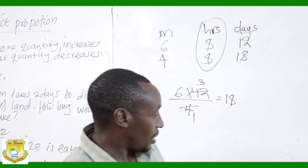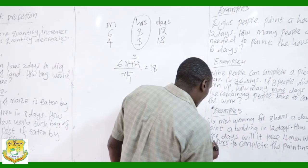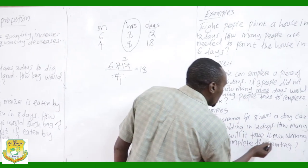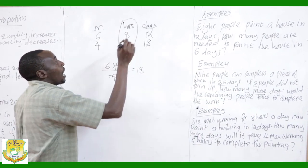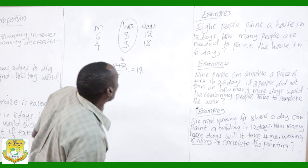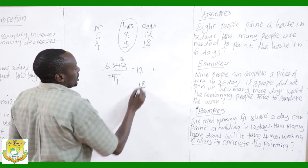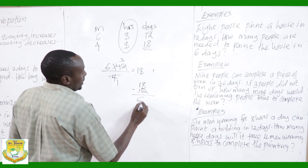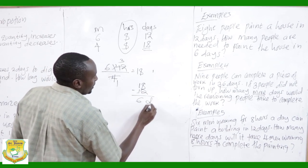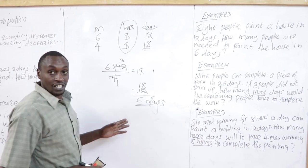Going back to the question: it asks how many more days. The original time was 12 days. The new time is 18 days. So 18 minus 12 gives 6 more days. That is our answer. Thank you.